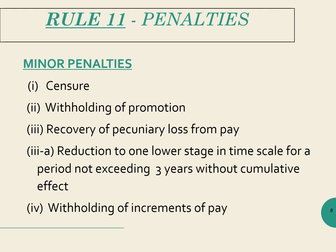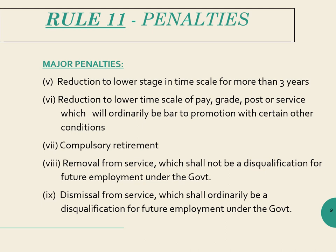Rule 11 of CCS-CCA Rules says that only the penalties listed in this particular rule can be levied after conclusion of disciplinary proceedings. The penalties are of two types: minor and major. Only any of these penalties can be levied on government employees after giving an opportunity. Anything outside this list cannot be levied. After completion of disciplinary proceedings or after giving a charge sheet under Rule 14 or Rule 16, penalty can be given only from this list. The disciplinary authority cannot devise his own penalty and impose it on the government employee.